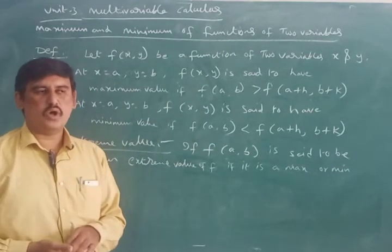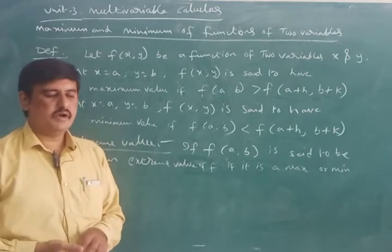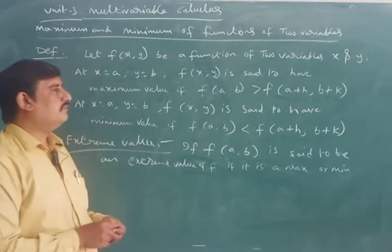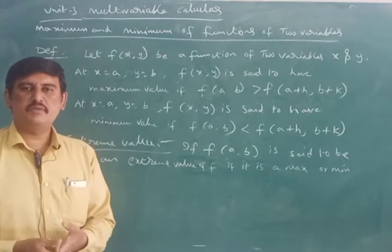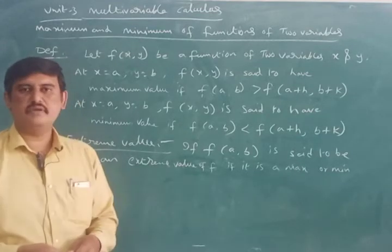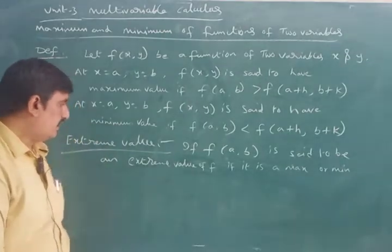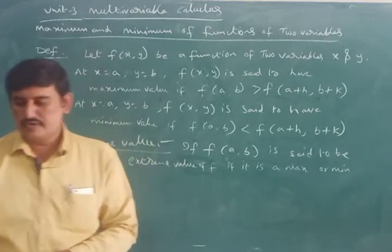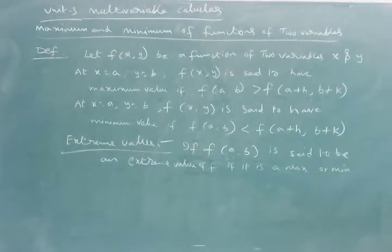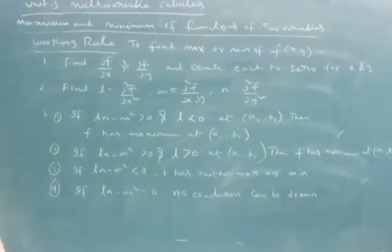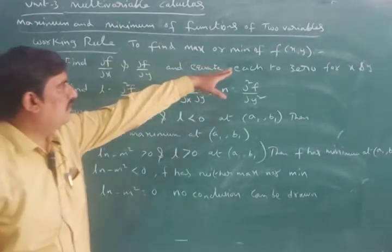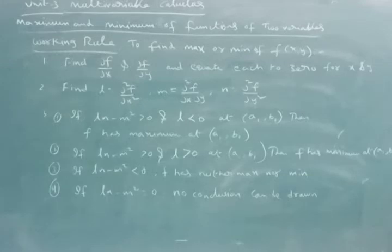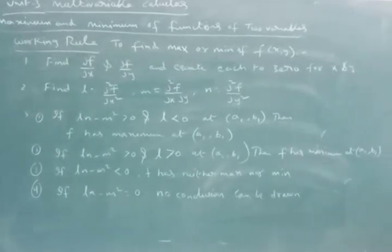Now how do we find maxima or minima of a given function? That method is very important. At the intermediate level we have maxima and minima of one variable, but here in Engineering Mathematics 1, we have maxima and minima of two variables. Let us see the working rule to find maxima or minima when two variables are given.